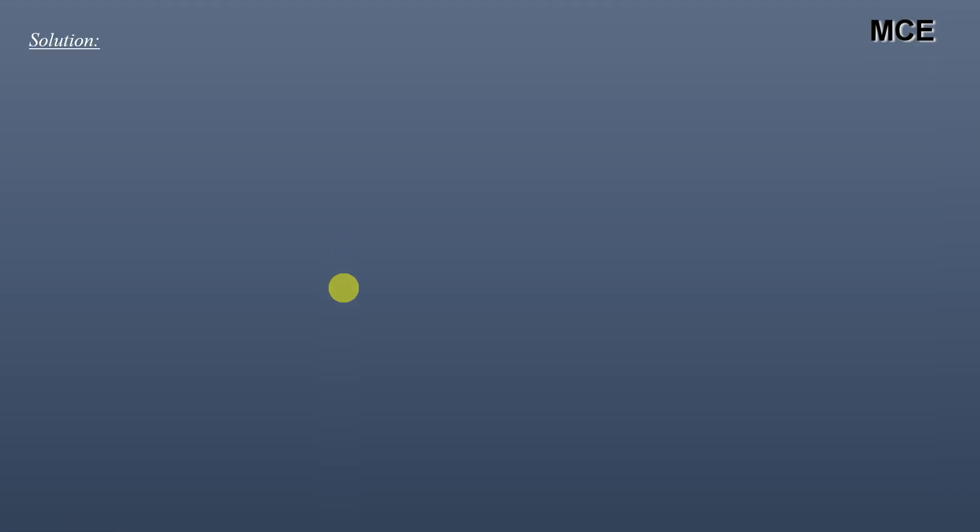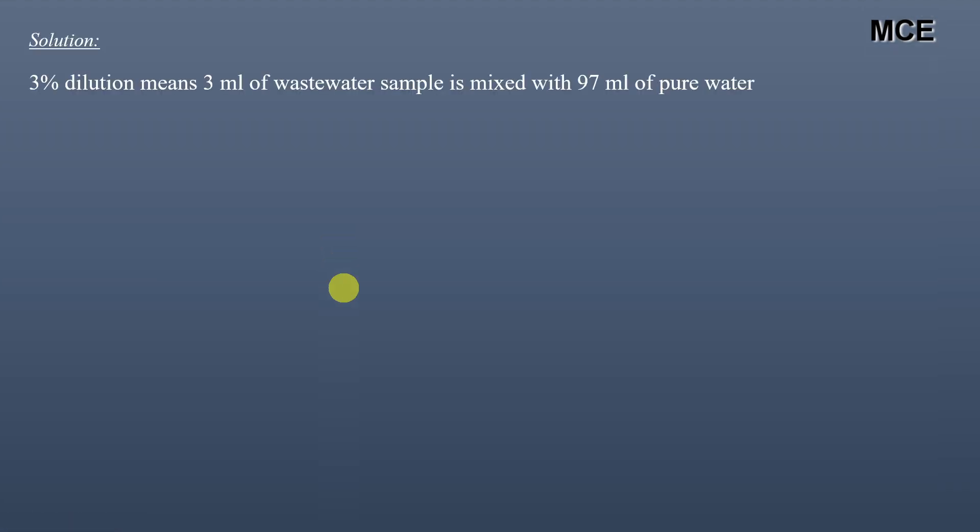First, since we are using 3% dilution — 3% dilution simply means that we are mixing 3 ml of wastewater sample with 97 ml of pure water.